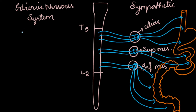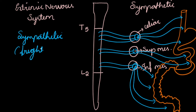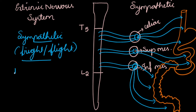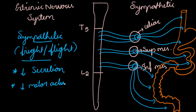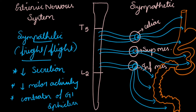Sympathetic stimulation is mainly seen during the fight-or-flight response. Whenever there is stress, we see the action of the sympathetic nervous system over the GIT: it inhibits secretions, reduces motor activity, causes contraction of GI sphincters, and vasoconstriction.